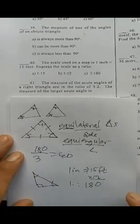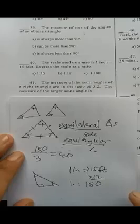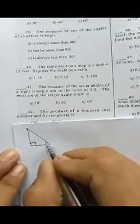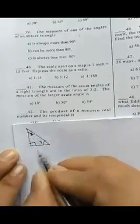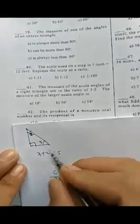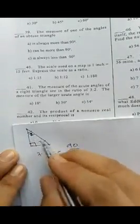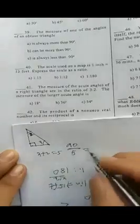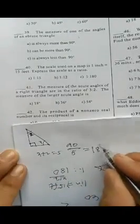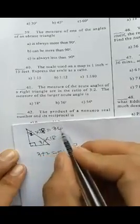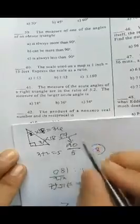The measure of the acute angles of a right triangle are in the ratio of 3 to 2. In a right triangle, one angle is 90, so the remaining two angles total 90 degrees. Add the ratio parts: 3 plus 2 equals 5. Then 90 divided by 5 equals 18 — one part is 18. So 3 times 18 equals 54, and 2 times 18 equals 36. The total is 36 plus 54 equals 90 degrees, confirming the answer.